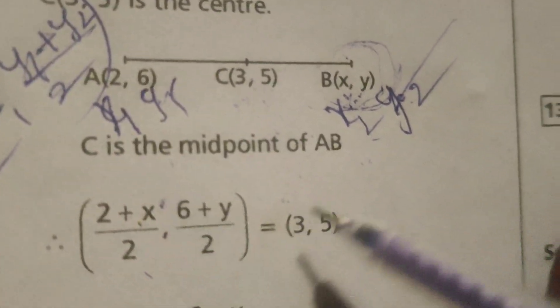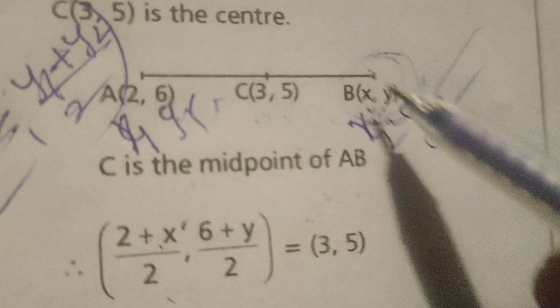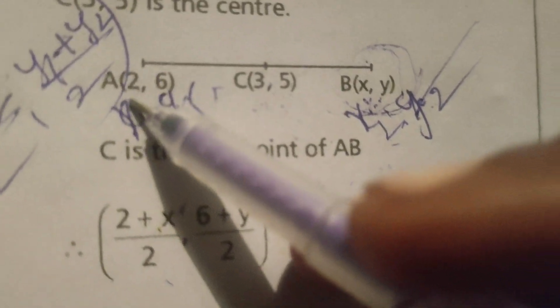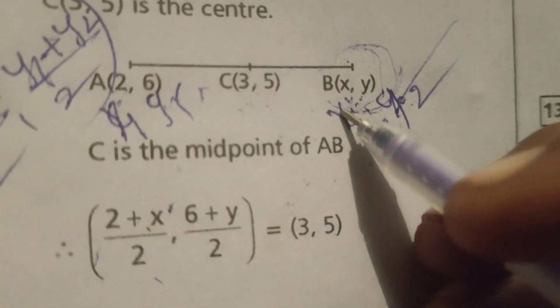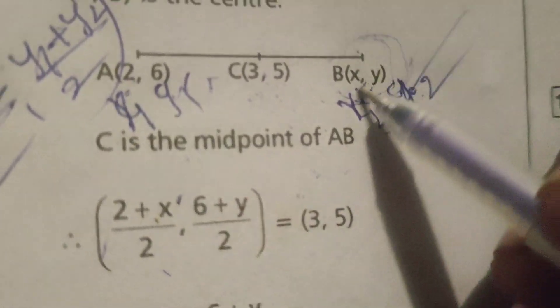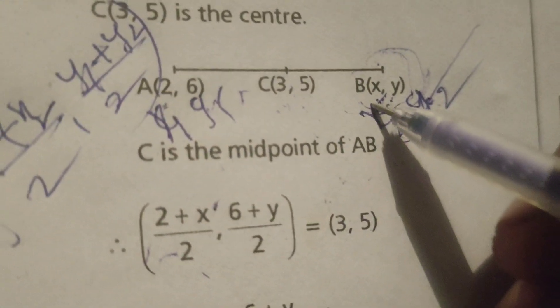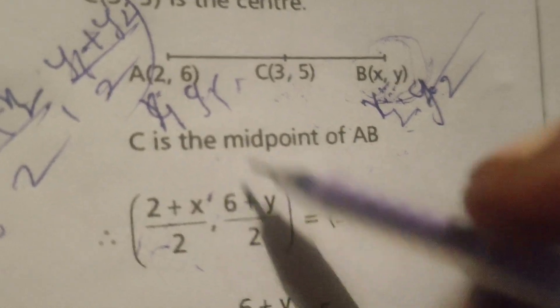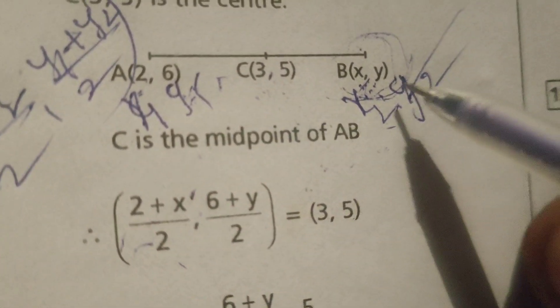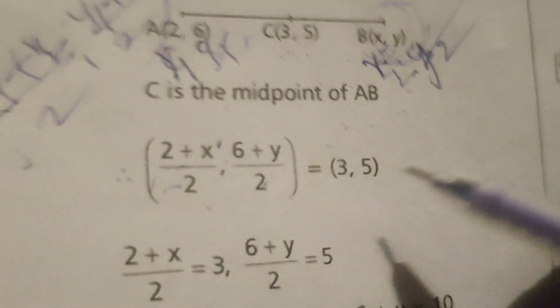Therefore, here find out the midpoint of AB. This is x₁, y₁. This is x₂, y₂. Here x₁ means 2, x₂ means x, so (2 + x)/2. y₁ means 6, y₂ means y, so (6 + y)/2.